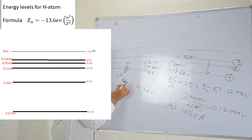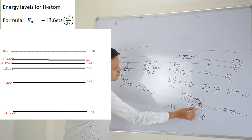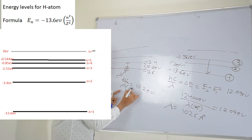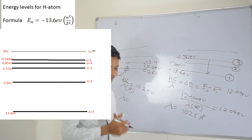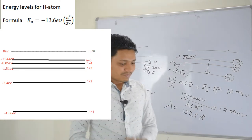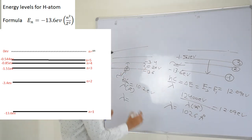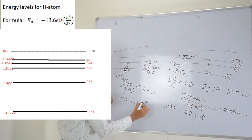Again, using hc equals 12400 eV·Å, put in 10.2 eV, you will get lambda in Ångström. After solving this, you will get wavelength lambda as 1216 Ångström.